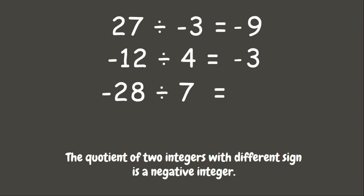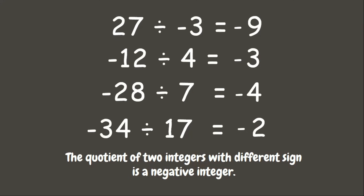We also have negative 4 divided by positive 17 — since they have different signs, the answer is negative 2.